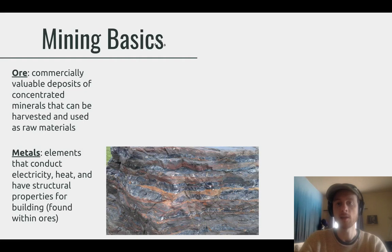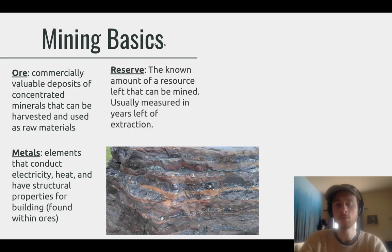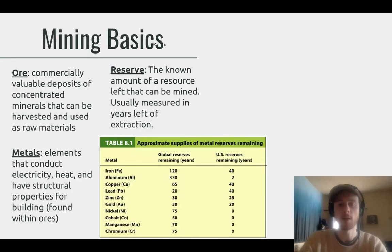We can see here a rock that has an iron ore deposit. Iron is a really valuable ore because within it there's iron that can be extracted and used to make steel, which is an incredibly valuable building material. Reserve refers to the known amount of a material left in the ground — often an ore or something like coal or oil — measured in years. Globally we have about 120 years of iron left, but only about 40 years of iron ore remaining in the United States. It's really important to note that all these metals are finite, meaning they are non-renewable and will run out at some point.